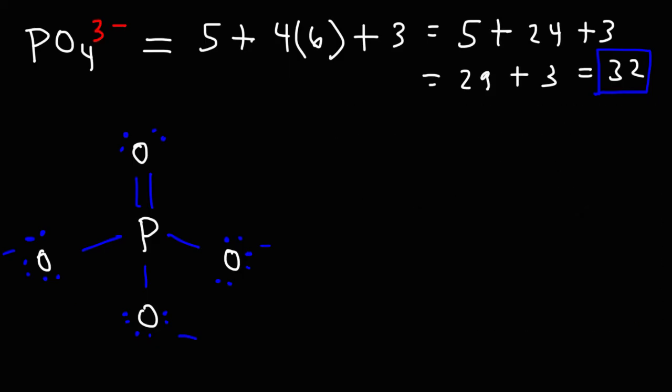Now, phosphate has many resonance structures. This is simply one of them. You could move the double bond from here to here and that will be a resonance structure. In order to draw a resonance structure, you need to move the electrons but not the atoms. So this is one example of a resonance structure.